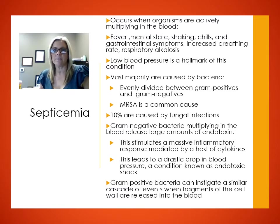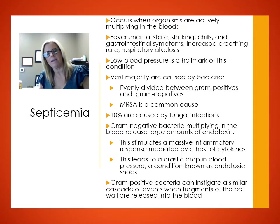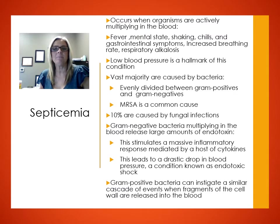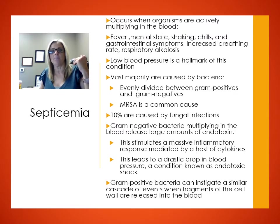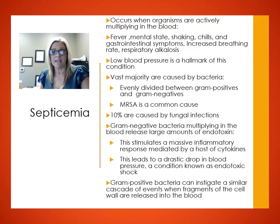The vast majority of septicemia cases are caused by bacteria, roughly evenly divided between gram-positive and gram-negative. MRSA — methicillin-resistant Staphylococcus aureus — is a very common one. About 10% are fungal, and polymicrobial infections involving more than one organism are being identified more frequently. Gram-negative bacteria multiplying in the bloodstream release large amounts of endotoxin, causing a massive inflammatory response with cytokines, which reinforces the drop in blood pressure — this is called endotoxic or gram-negative shock.